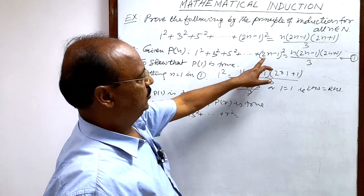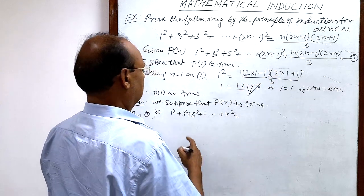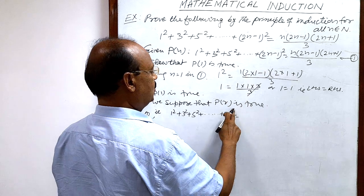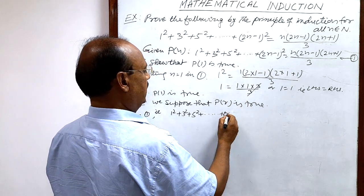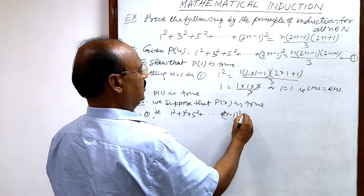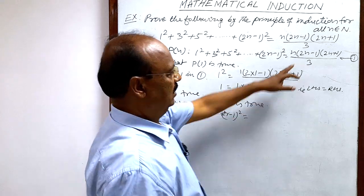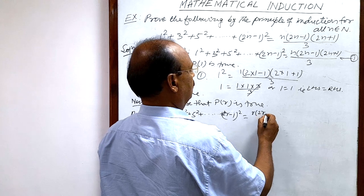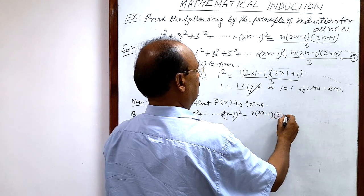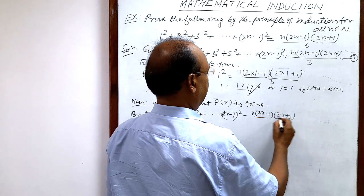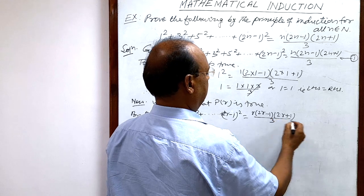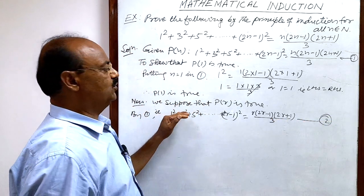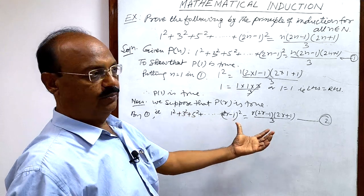So (2R−1)² on the left equals R(2R−1)(2R+1)/3 on the right. This is relation number 2. We have supposed that PR is true.